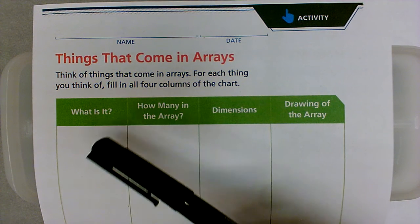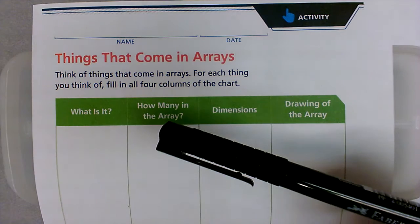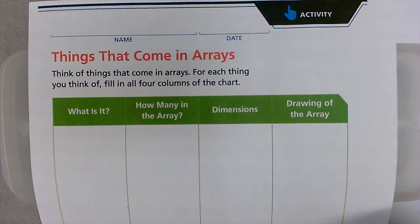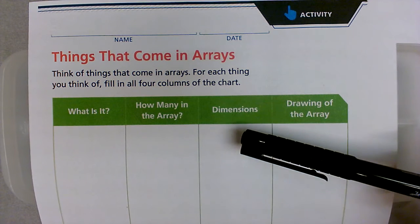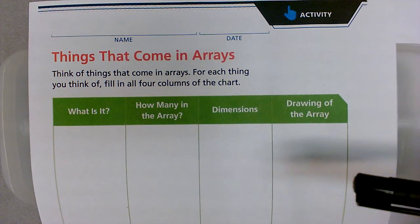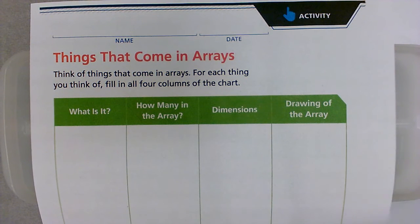The first column is: what is it? The second column is: how many in the array? The dimensions is the third column, and the fourth column is a drawing of the array.